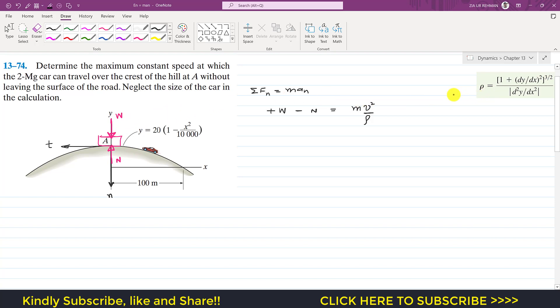From this equation we can find the radius of curvature, but at point A we are asked to find the maximum constant speed at which the 2 megagram car can travel over the crest of the hill at A without leaving the surface of the road. So if the car is just in contact with the road or if it is just leaving the contact with the road, so at that particular instant N will be equal to 0.